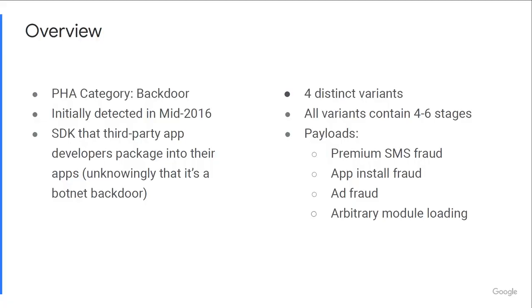Chamois is a PHA category we use in Google Play Protect, and what we classify it as is a backdoor. The reasoning is because it can be remotely commanded and controlled to do different malicious behaviors. Those malicious behaviors can generally be categorized into three different types of fraud.